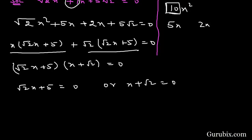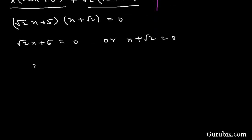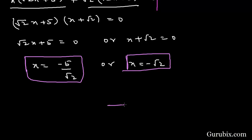This means x = -5/√2 or x = -√2. These are the two roots of the given quadratic equation. Thank you.